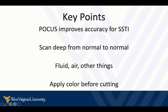To repeat the key points: point-of-care ultrasound improves accuracy for skin and soft tissue infections or lesions. Always scan deeper than you think and go from normal tissue through the area of concern back to normal tissue again. Recognize what fluid looks like, but also recognize air and other findings. And always, always, always — before you cut into anything — put color Doppler on it and make sure it's not a vascular structure.